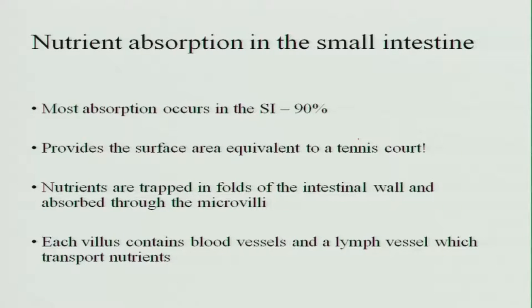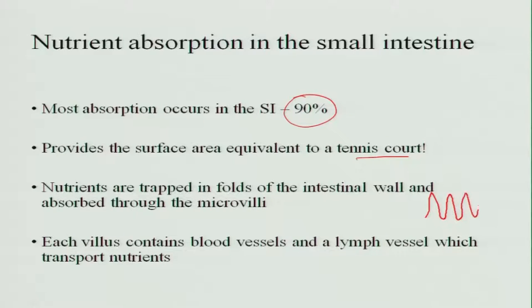Nutrient absorption in the small intestine: about 90 percent of the absorption of all nutrients occurs in the small intestine. It provides a surface area equivalent to a tennis court — if you open the small intestine and spread it out, the area is very large for absorption. Nutrients are trapped in the folds of the intestinal wall, which have a lining called villi, and are absorbed through these microvilli. Each villus contains blood vessels and lymph vessels which help in transporting the nutrients.